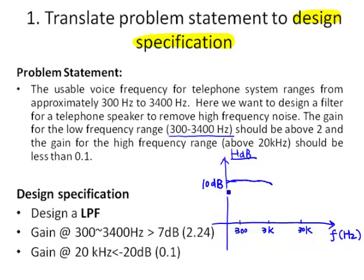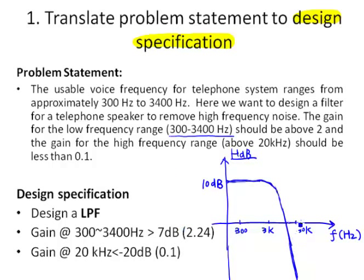At 7 dB, the equivalent gain is 2.24. At 20 kHz, the gain of the circuit should be less than 0.1. Converting that to decibels gives negative 20 dB. So when the frequency is 20 kHz, the gain should be less than negative 20 dB.